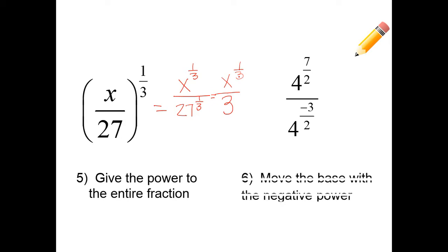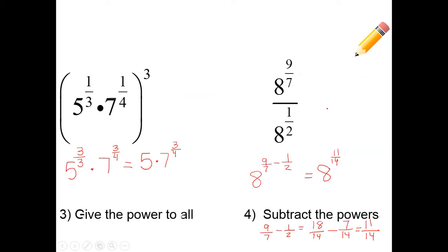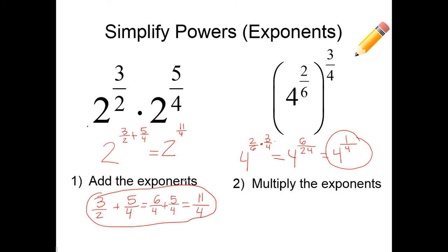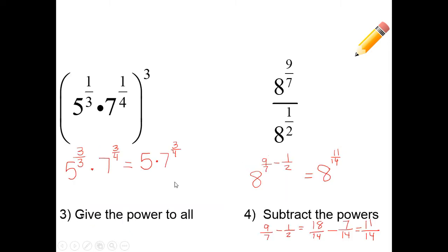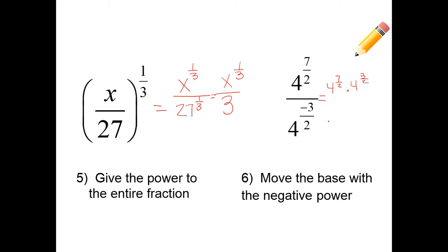Last one: when you have a negative exponent, you're going to move the base with the negative power to the top. So I'm going to have 4 to the 7/2 times 4 to the 3/2. Looking back at our rule for multiplying like bases, we're going to add the exponents: 4 to the 7/2 plus 3/2, which is 4 to the 10/2. Now 10/2 is not as simple as it can be — 10 divided by 2 is 5. So you should have 4 to the 5th, which on your calculator equals 1,024.